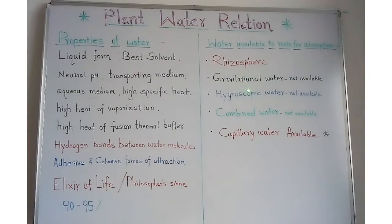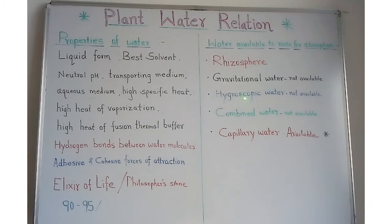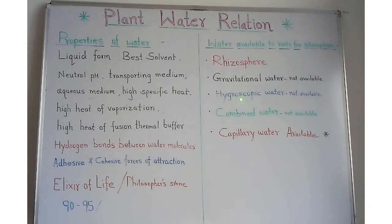Gravitational water is the water that percolates deep into the soil due to gravity — this water is not available for absorption. Fine soil particles imbibe or adsorb water and hold it tightly; this is called hygroscopic water. Adsorption is a surface phenomenon where molecules simply attach to the surface of the absorbent. This water is also not available for absorption.